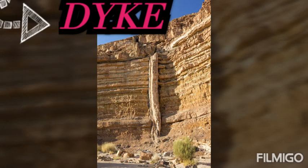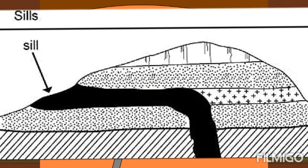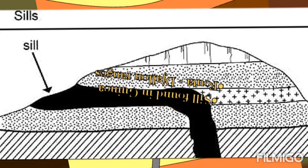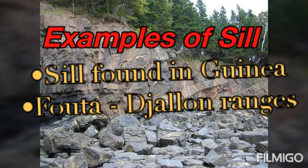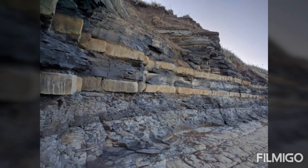The second intrusive feature is the sill. The sill is an intrusive feature which lies horizontal along the bedding planes. It is formed when the magma cools and solidifies horizontally along the bedding planes. Like the dike, the sill is also an intrusive feature. Examples of sills include those formed in Junior and those formed in the closer mountain ranges.